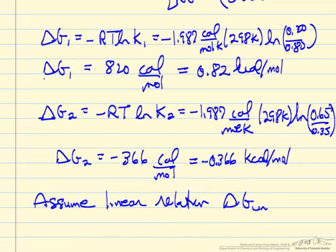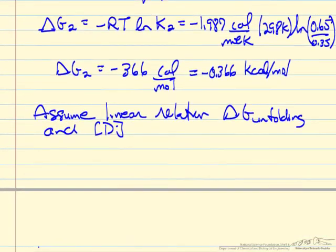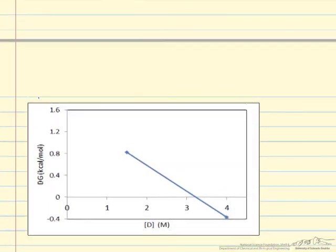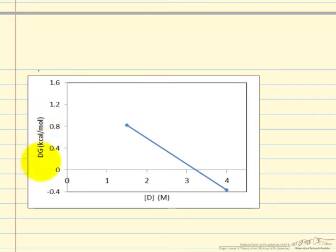So now we're assuming there's a linear relationship between delta G of unfolding and the concentration of the urea. What I've done is make an Excel plot. Here's delta G2 here, here's delta G1 unfolding in kcals per mole, here's the concentration of the urea. Straight line, and essentially we want to extend this straight line to the native condition where the concentration is 0.